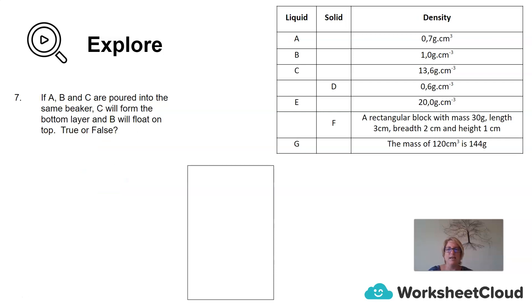Then we have a look at question 7. We have liquids A, B, and C, and we want to pour these liquids into a beaker. We want to work out which will form the bottom layer, which will form the middle layer, and which will form the top layer. Obviously, the liquid that is the most dense will be at the bottom. Then as you move up the beaker, you are going to decrease in density. The next layer is going to be less dense, and the top layer is going to be the least dense.